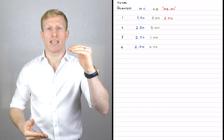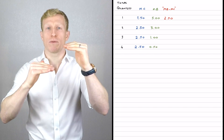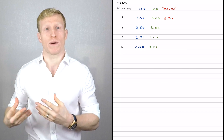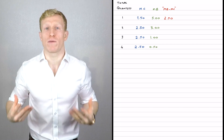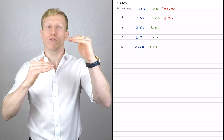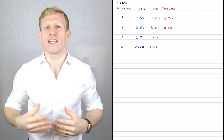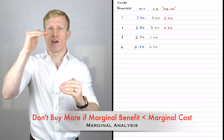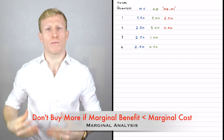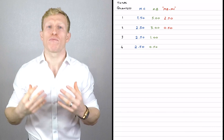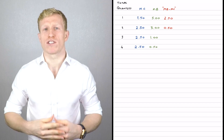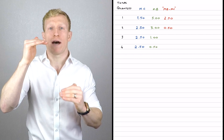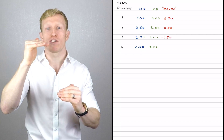For the second ice cream, the marginal benefit is £3 and the marginal cost is £2.50, so you're definitely willing to buy it — giving up £2.50 of cash for a product you value at £3, gaining a net benefit of £0.50. But for the third ice cream, the marginal benefit is only £1 while the marginal cost is £2.50, meaning you'd be giving up more than you receive, making yourself worse off by £1.50.